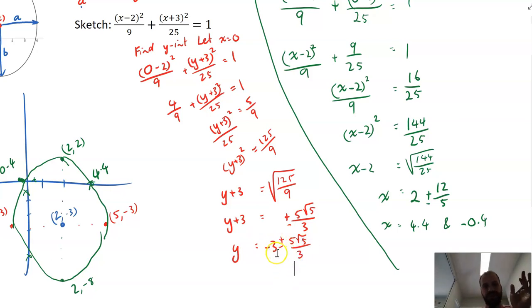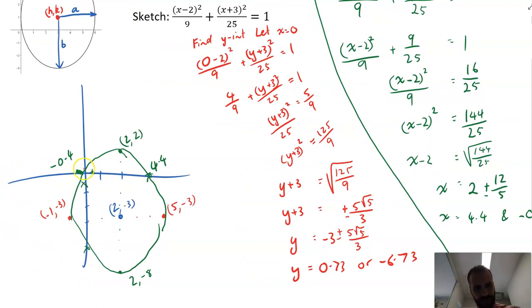Now that's a little bit difficult to comprehend. So it's probably a good idea to type it into a calculator, get some decimal answers. And there's my two decimal answers here. y equals 0.73, so that's sort of there-ish. And negative 6.73 is sort of maybe there-ish.